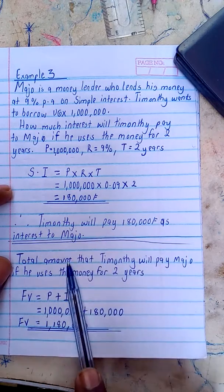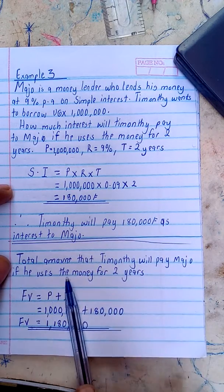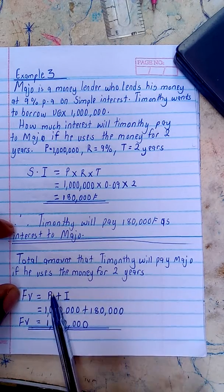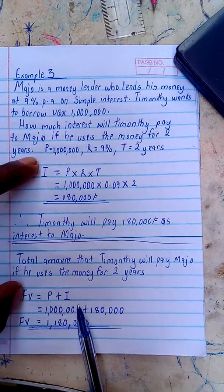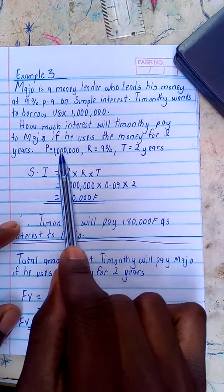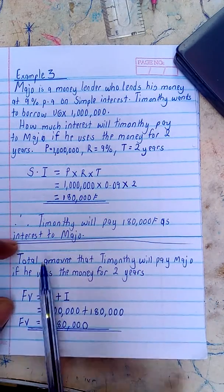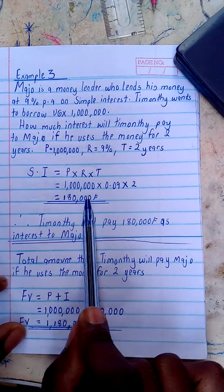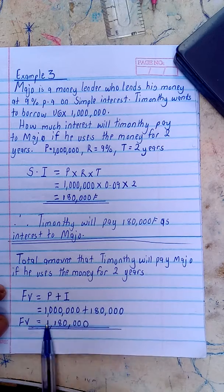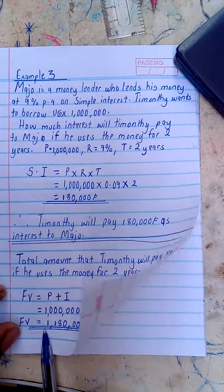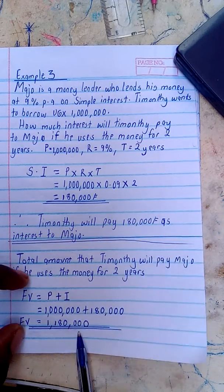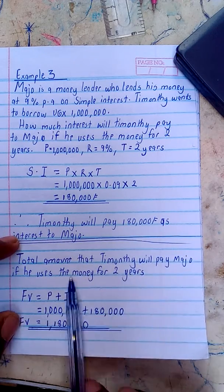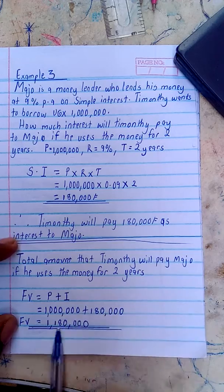If we want to find the total amount Timothy paid, we sum the principal and the interest. The future value equals the principal plus the interest: one million plus 180 thousand. Timothy will pay a total sum of one million, one hundred and eighty thousand in total when the two years are up.